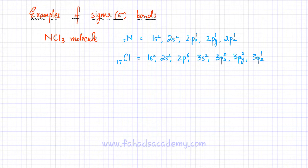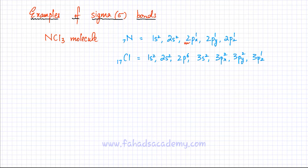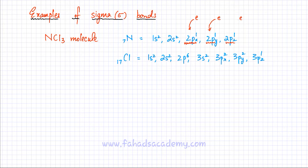In this example of a sigma bond, I'm going to discuss an NCl3 molecule in which nitrogen is making three single covalent bonds with chlorine — all single bonds are sigma bonds. Going into detail, nitrogen has seven electrons, so its electronic configuration is 1s2, and the outer second shell has 2s2, 2px1, 2py1, and 2pz1. This means nitrogen has three half-filled orbitals — 2px, 2py, and 2pz — all needing one extra electron. So nitrogen is going to attract electrons from other atoms to complete that second shell.